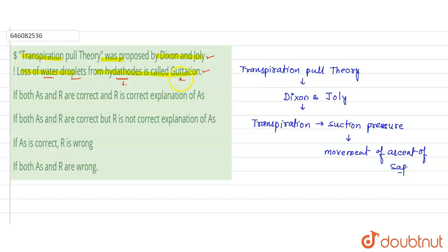That process is called guttation. So the reason is also correct, but it is not the correct explanation of the assertion. So the option where both assertion and reason are correct, but reason is not the correct explanation of assertion, is the correct option for this question.